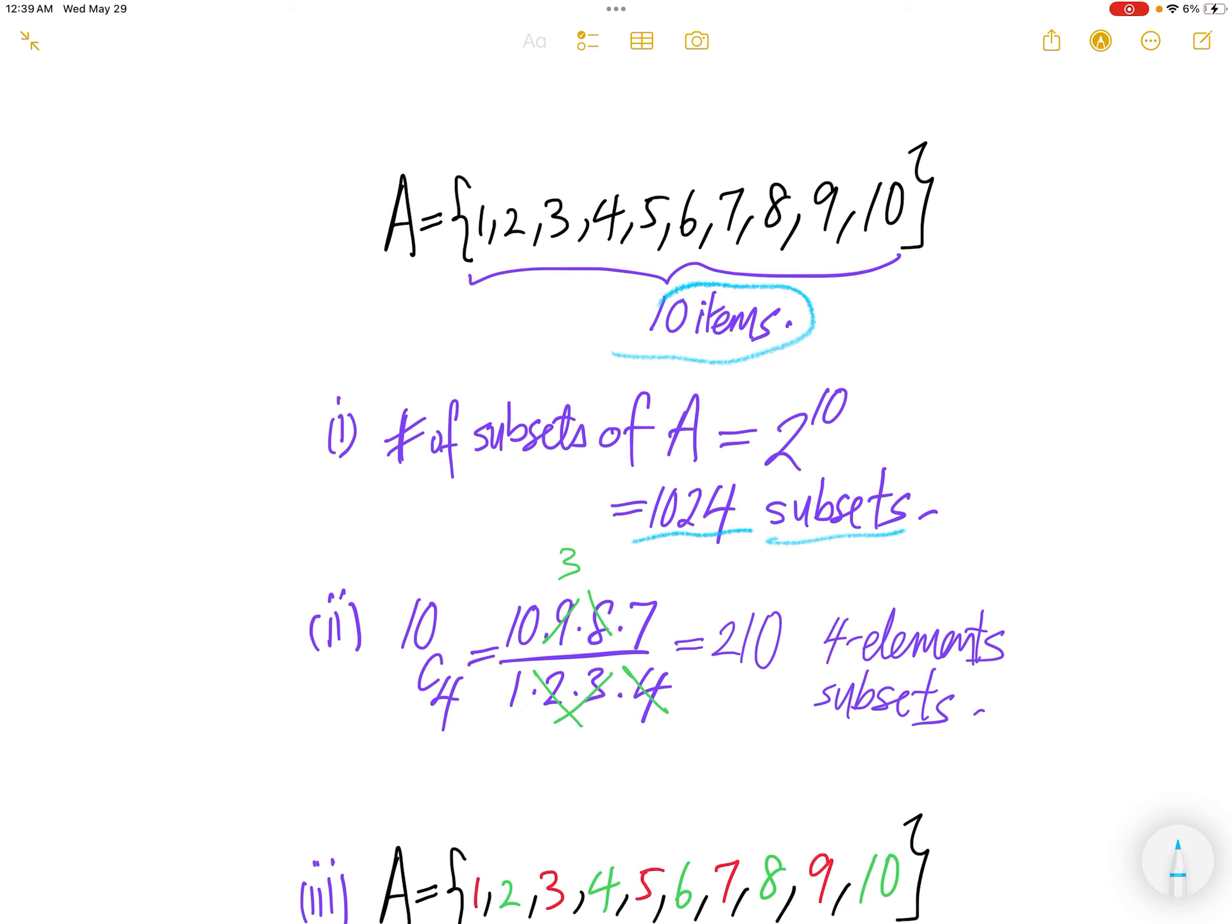So those subsets include empty set, a set of 1, and then dot, dot, dot, until the last one is the set of everything.